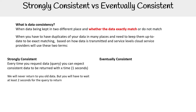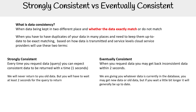With eventual consistency, when you request data, you may get back inconsistent data within a given period — say two seconds — they are giving you whatever data is currently in the database, so you may get new data or old data. But if you wait a little bit longer, it will generally be up to date.